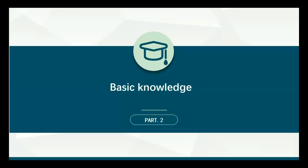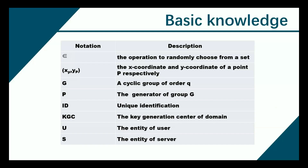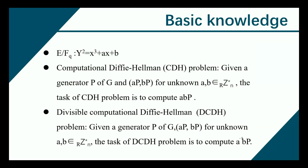The second part of the report is an introduction to basic knowledge. Here is the list of notation used in this article. The symbol E(F_Q) denotes an elliptic curve E over a prime finite field F_Q defined by the given equation.